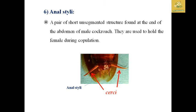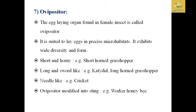The ovipositor is a modification found in female insects used for laying eggs. It is suited for placing eggs in precise microhabitats and shows wide diversity in form. It can be short and horny in short-horned grasshoppers, long and sword-like in long-horned grasshoppers and katydids, needle-like in crickets, and even modified into a sting-like structure in worker honeybees.